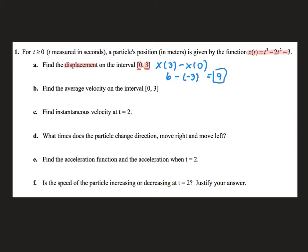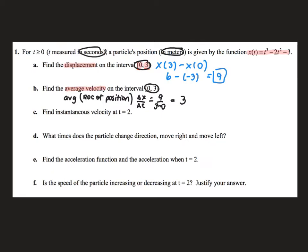Basically, from the starting point that my particle started at, it is now 9 units in a positive direction, or 9 units to the right. The next question wants the average velocity. Average velocity is just the average rate of change of position — it has nothing to do with derivatives, it is just our change in position over our change in time. So delta x over delta t. I already did my change in position — that was displacement — so this is 9 over 3 minus 0, and I get 3. My average velocity is 3 meters per second.